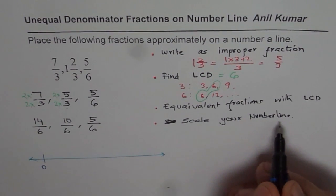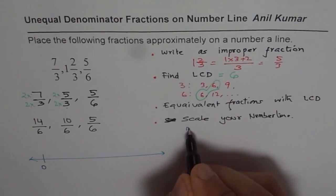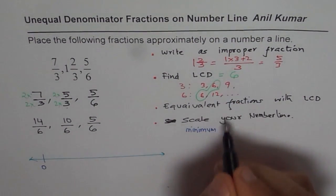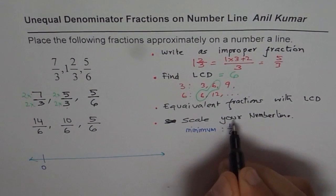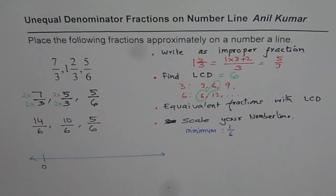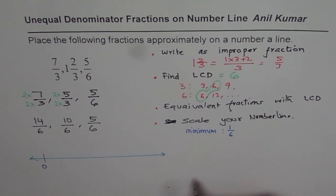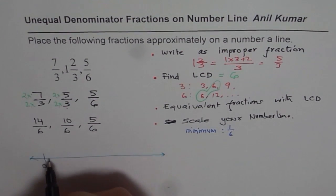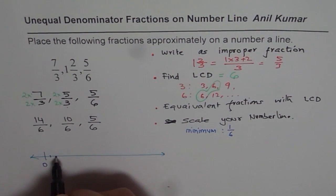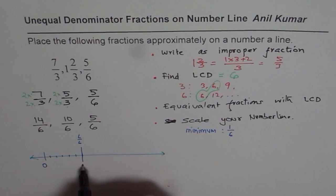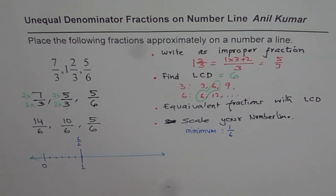What should my minimum scale be? Minimum should be 1 over 6, since every fraction is 1 sixth, 2 sixth, 3 sixth, 5 sixth is the lowest. So let's go by 1 sixth. So we have 1 over 6, 2 over 6, 3 over 6, 4, 5, 6 sixth. 6 sixth is as good as 1. So that is how you scale your number line.